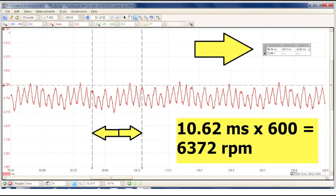We can also measure how fast the pump is spinning. By using the time cursors on the scope, we can measure how long it takes for one revolution of the armature. In this case, 10.62 milliseconds. Time 600 will give us the RPM or speed of the fuel pump motor.